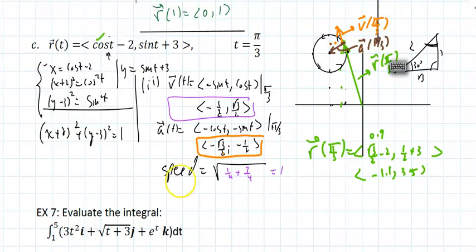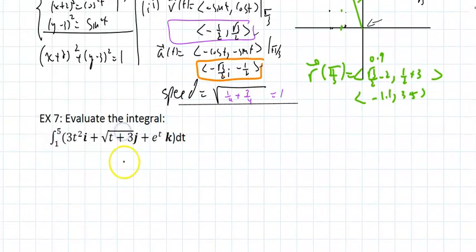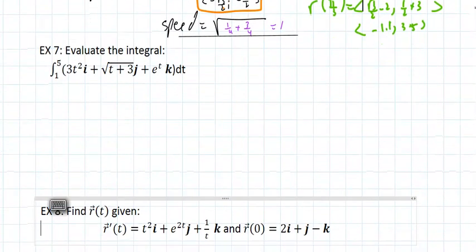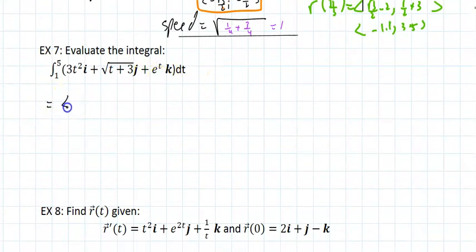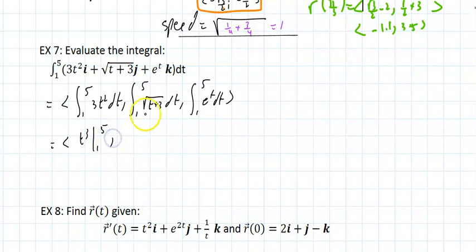It's very important to grasp this: students often draw all three vectors from the origin — you get no credit for that. You can't do that. The last aspect is traditional integration. If I want to integrate this vector, I compute component-wise: the integral from 1 to 5 of 3t² dt, the integral from 1 to 5 of √(t+3) dt, and the integral from 1 to 5 of eᵗ dt. That gives t³ evaluated from 1 to 5, and (2/3)(t+3)^(3/2) evaluated from 1 to 5, and eᵗ evaluated from 1 to 5.